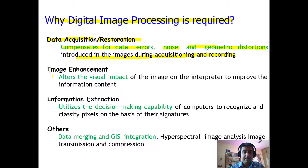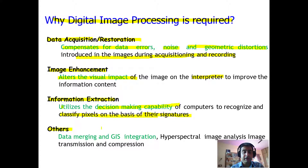It also alters the visual impact and makes the image more interpretable to the interpreter — in other words, it enhances the image. If we want to extract information from the image, it needs to be extracted for efficient digital decision making. If we are able to classify pixels based on their signatures, we may be able to make good decisions regarding any project. It is also required for data merging, GIS integration, hyperspectral image analysis, and image transmission and compression.